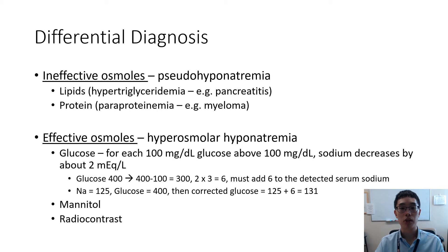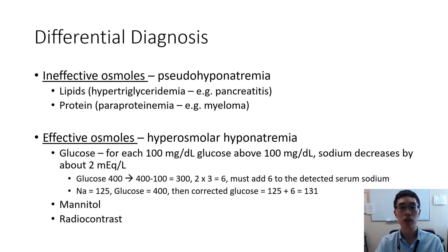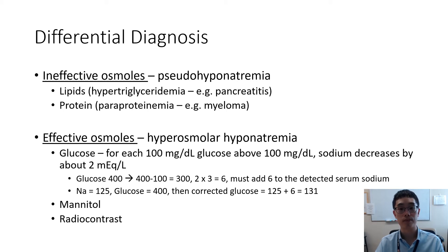We can actually correct for hyponatremia due to glucose by using a formula. For each 100 of glucose above 100, the sodium generally decreases by about 2. For example, if you have a glucose of 400, there is a 300 difference between 100 and 400, and for each 100 increase in glucose the serum sodium has to be corrected by 2 — so in this case we correct by 6. If our detected serum sodium is 125 with a glucose of 400, then we add 6 to our detected sodium of 125 to come up with a corrected sodium of 131, which is much less alarming compared to a sodium of 125.